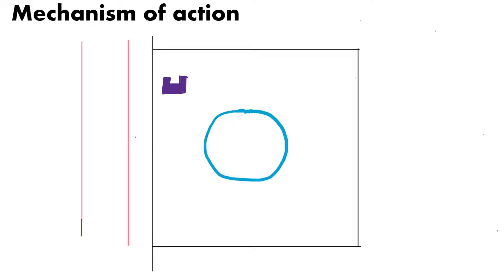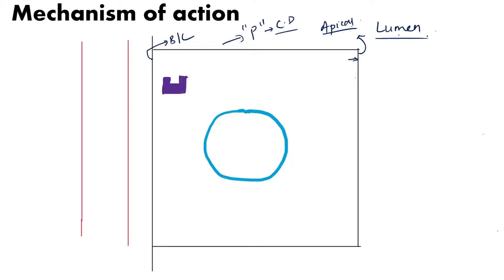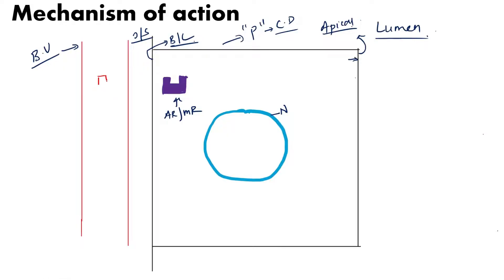Now let us understand the mechanism of action. This cell I have drawn is the principal cell (P cell), which lines the collecting ducts. The membrane facing the lumen is called the apical membrane, and the membrane on the other side is called the basolateral membrane. Adjacent to the basolateral membrane is the interstitial space, and next to that are blood vessels. Inside the cell there is a receptor called the aldosterone receptor, also known as the mineralocorticoid receptor.